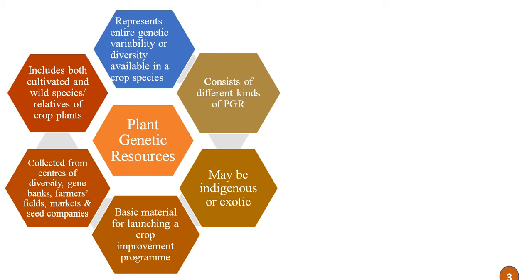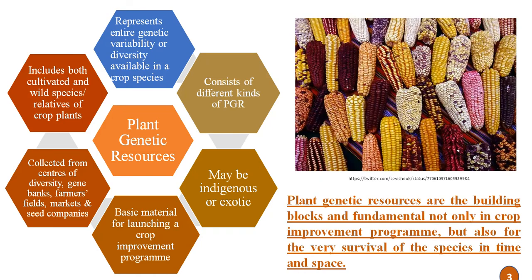This is the basic material for launching a crop improvement program. These plant genetic resources are collected from centers of diversity, gene banks, farmers' fields, markets, and seed companies wherever there is availability. They include both cultivated and wild species or wild relatives of crop plants. As this diagram shows, these plant genetic resources are the building blocks and fundamentals not only for crop improvement programs but also for the very survival of the species in time and space.